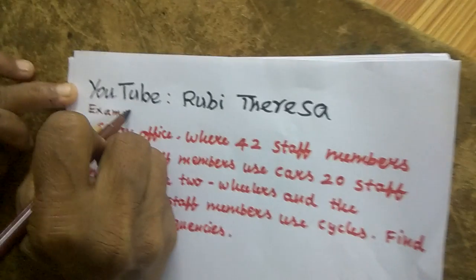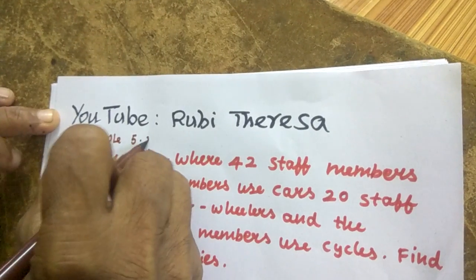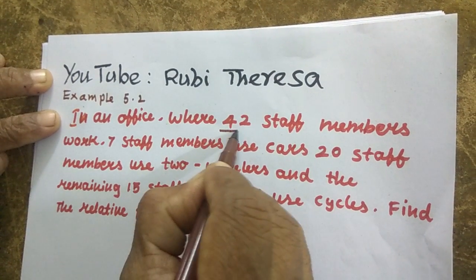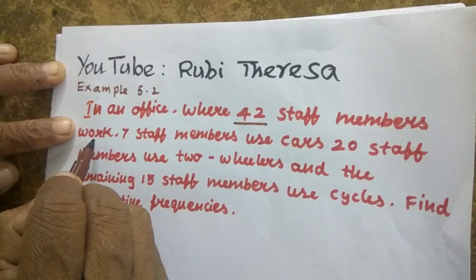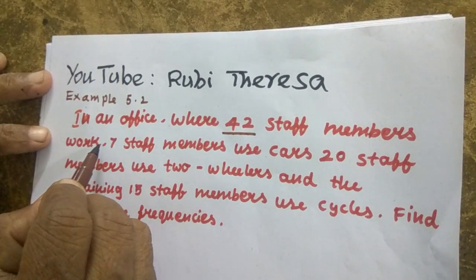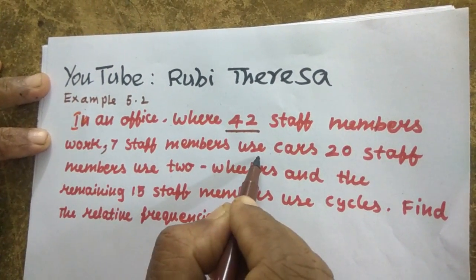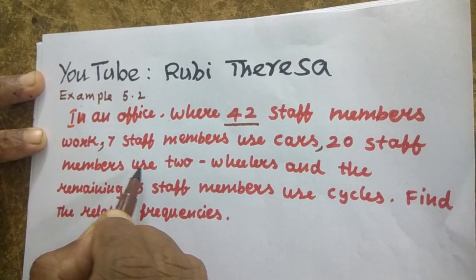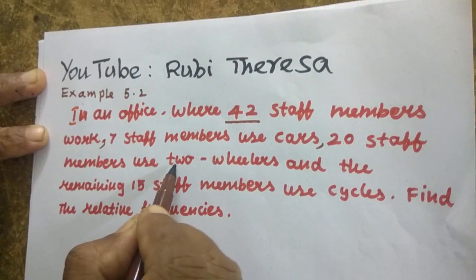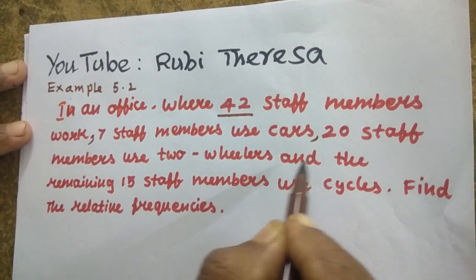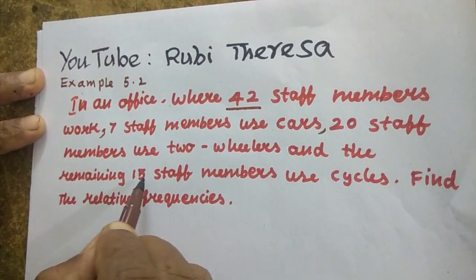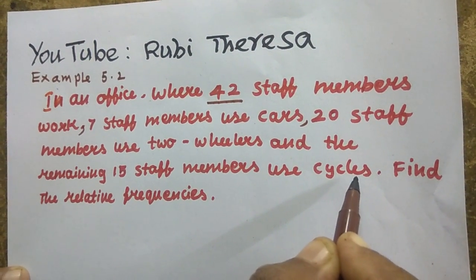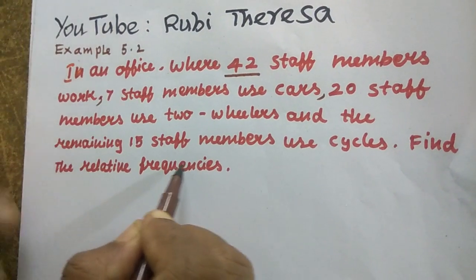Example 5.2: In an office where 42 staff members work, 7 staff members use cars, 20 staff members use 2 wheelers and the remaining 15 staff members use cycles. Find the relative frequencies.